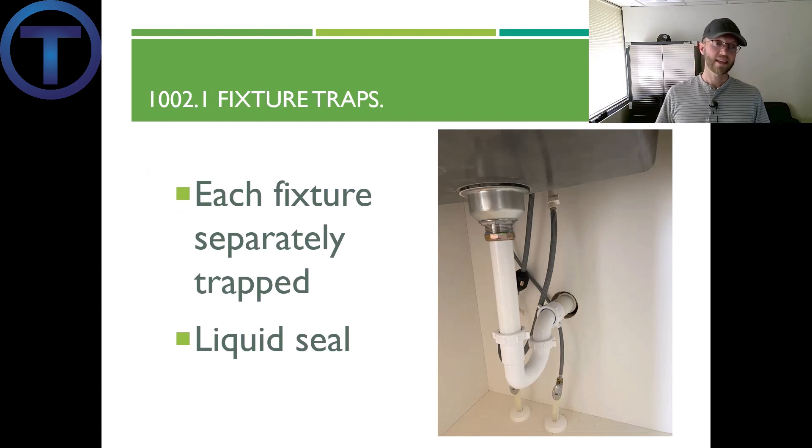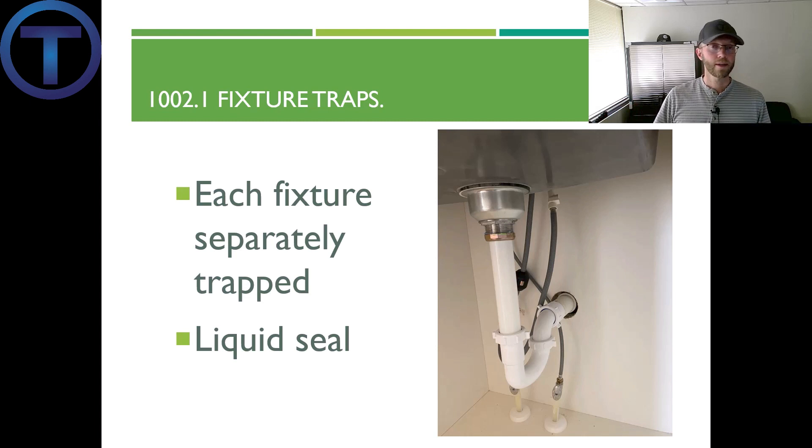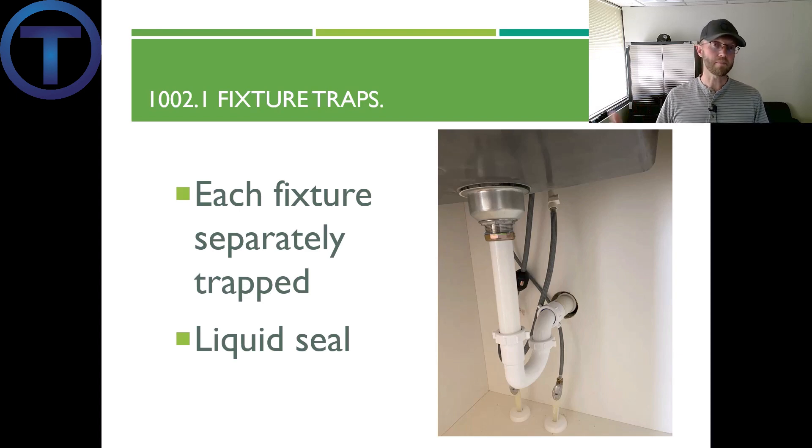Section 1002.1 states that every single fixture that we install should be separately trapped. That means the sink has its own trap, a tub has its own trap — everything we hook up has a trap. And that trap should have a liquid seal, which is critical in preventing sewer gases from coming back into the building. Understanding traps is the difference between someone who knows about plumbing and someone who doesn't. When I was a child, my mom's wedding ring fell down the sink and got caught in that U-shaped piece of pipe — I thought that's what it was for. Turns out that's a convenient secondary purpose. But a true plumber knows this is about sewer gas and creating a liquid seal to stop the stink.